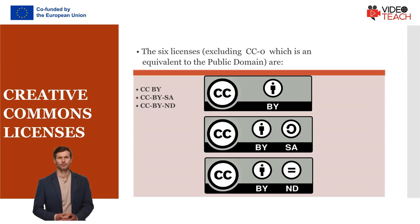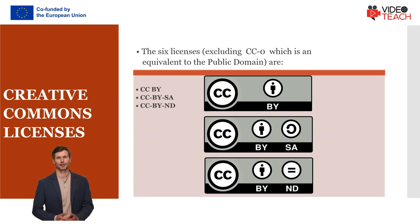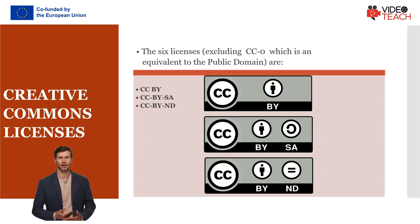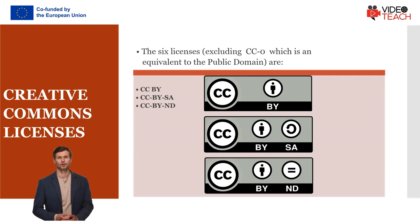CC BY SA allows re-users to distribute, remix, adapt, and build upon the material in any medium or format, so long as attribution is given to the creator. The license allows for commercial use, but if you remix, adapt, or build upon the material, you must license the modified material under identical terms. CC BY ND allows re-users to copy and distribute the material in any medium or format in unadapted form only, and only so long as attribution is given to the creator.